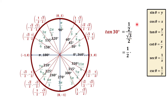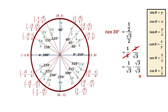Dividing these fractions, we copy the numerator and then get the reciprocal of the denominator, giving us 2 over square root of 3. The 2's cancel, giving us 1 over square root of 3. To rationalize, we multiply by square root of 3 over square root of 3, giving us square root of 3 over 3 for tangent 30 degrees.